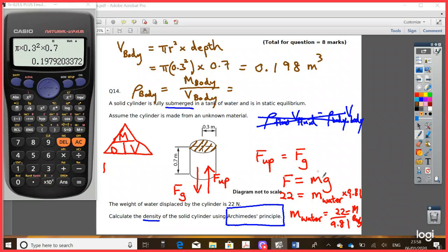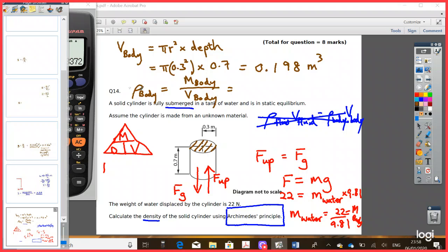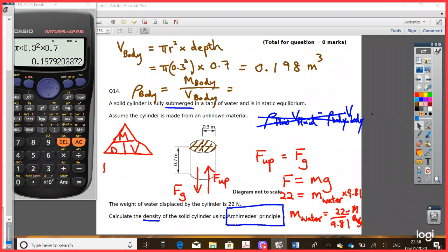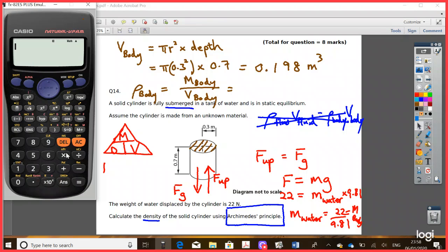And so we know the mass of the body is equal to the mass of the water. So I can then say, if we put that... So if we go ahead and say that's 22 divided by 9.81, and then this answer we're going to divide it by 0.198.